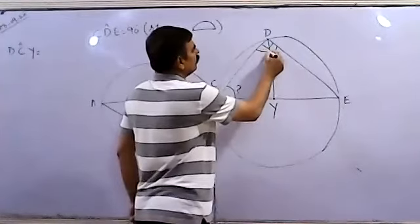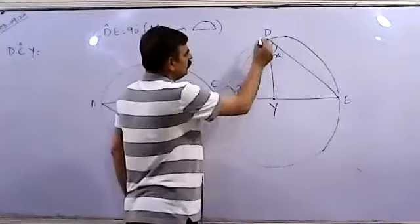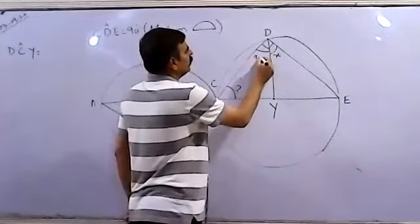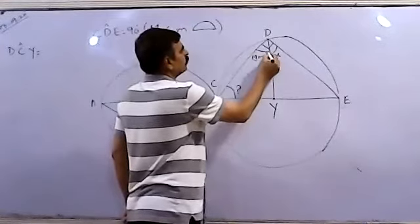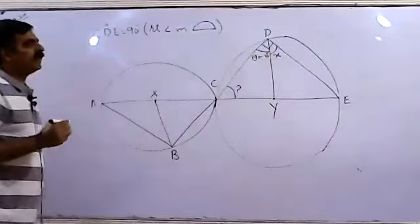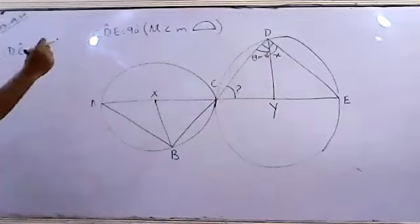It means the value of this angle CDE, it will be 90 degree. 90 minus X degree. We will be 90 minus X. Total 90.